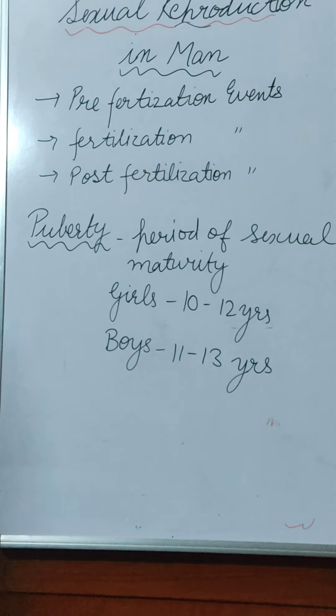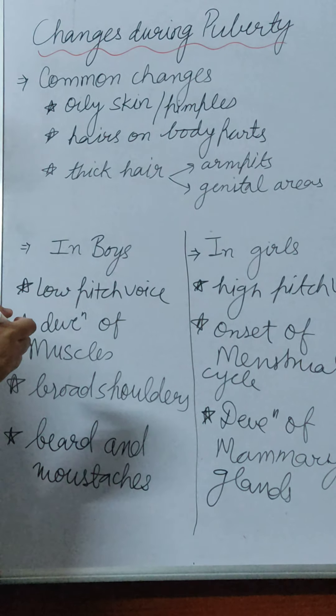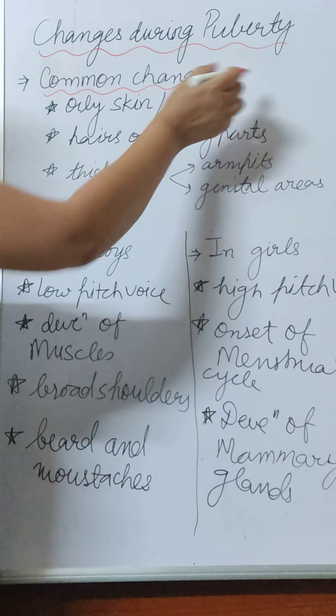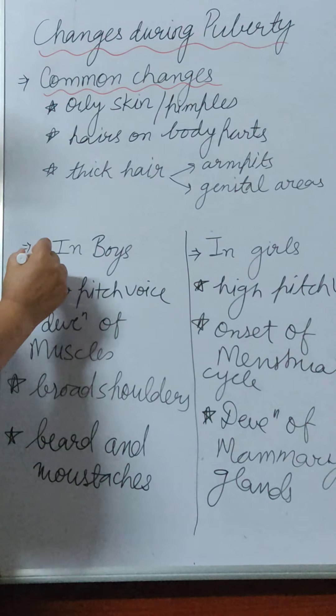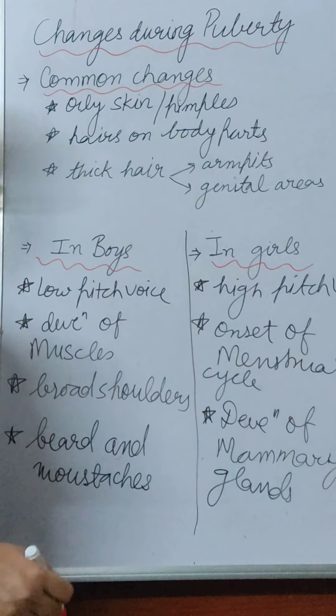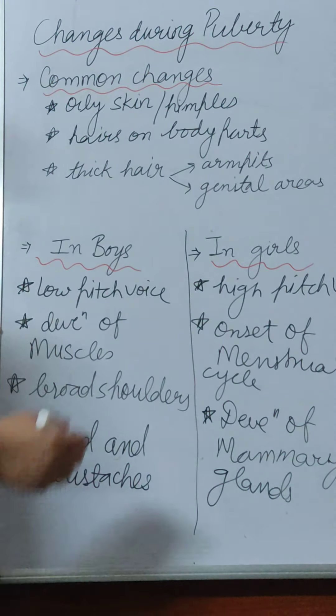Now let us learn about the changes that occur during puberty, the age of sexual maturity. These changes are categorized into three categories: common changes that occur in both boys and girls, changes that occur only in boys, and changes that occur only in girls. The common changes in both boys and girls include oily skin and pimples, thin hair growth on body parts like arms, legs, and chest.